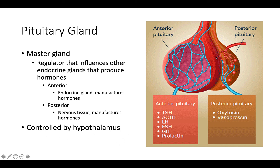The anterior portion of the pituitary is more of an endocrine gland — it manufactures many hormones that go on to affect other endocrine glands. The posterior pituitary is more like nervous tissue and also manufactures hormones. The difference in tissue type means they produce different hormones.